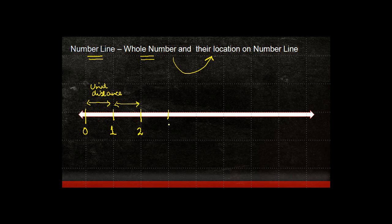Similarly, I can go ahead and write 3, 4, 5, 6, 7, 8, and this number line can go on indefinitely. But how do you find out the numbers on a number line?